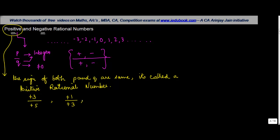So let's say, we have P which is plus 3 and Q as plus 5 or we have plus 1 plus 3 or we have maybe minus 1 and minus 3 or minus 1 minus 7. So what is happening in all these cases is that the sign of both P and Q are same. In such a case, whatever is the value of the rational number is always positive.